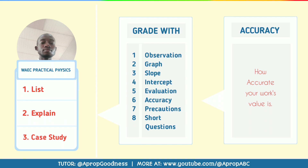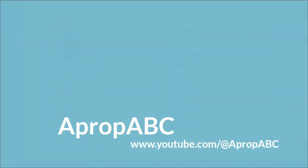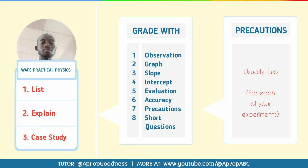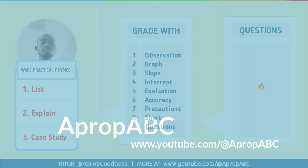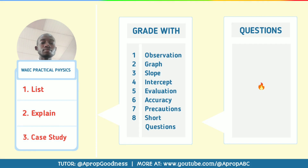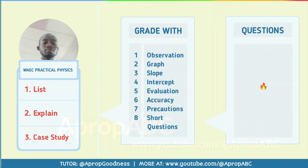The next one is accuracy. They will check your slope very well — if it is accurate, you get another mark for that. The next one is precaution. You will be required to give two precautions, so make sure you learn those precautions for mechanics, for optics, and for electricity. Learn their precautions well. Also learn short-answer questions on each part of the experiment — mechanics, optics, and electricity — as this will scale you up for your physics practical examination.